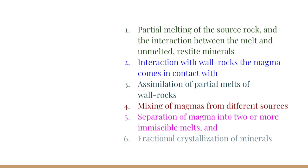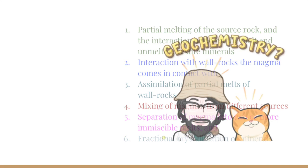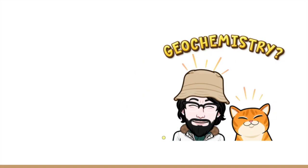Additional processes include assimilation of partial melts of wall rocks, mixing of magmas from different sources, separation of magma into two or more immiscible melts, and fractional crystallization of minerals. In order to understand how magma compositions evolve during these processes, one needs a little geochemical background. Don't worry if you missed your geochemistry class — I will cover a few important things in this video. If you want to learn more, stay tuned to my YouTube channel, as I will be uploading a video on the geochemistry of ore deposits shortly. Alternatively, check the description box for a list of textbooks and research articles.